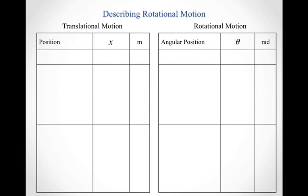When we say translational motion, what we basically mean is how an object moves through space, and you can start by talking about an object's position as it does that. With rotational motion, we're going to talk about how an object spins about some point, and you can start by talking about its angular position.